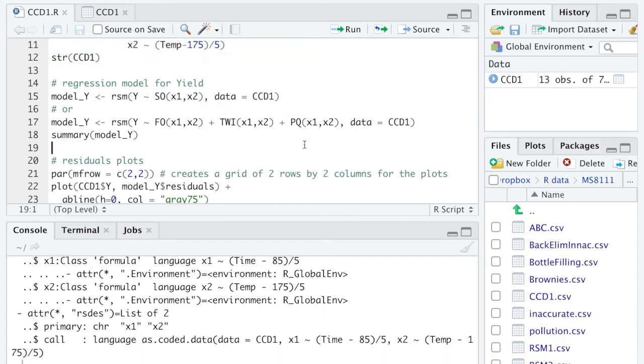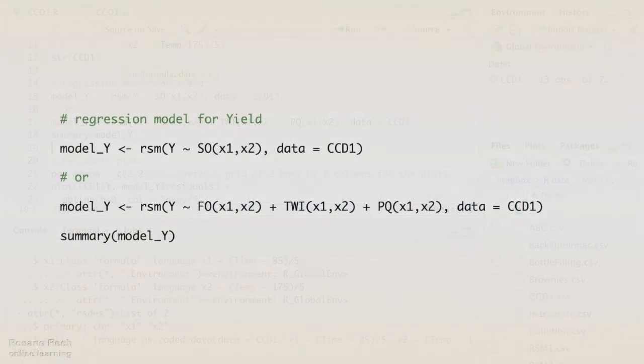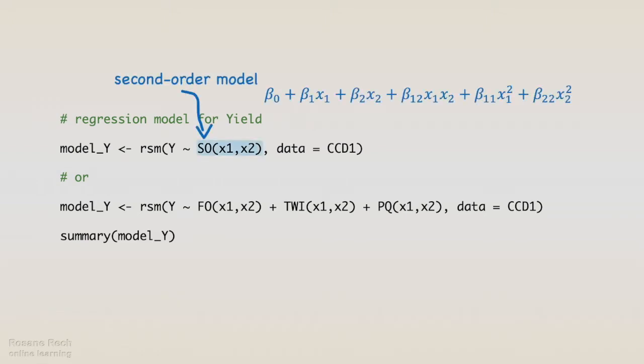The next step is to run a second-order regression model using the rsm function. We can build the second-order model using the command SO, which stands for second-order, and returns the complete model.